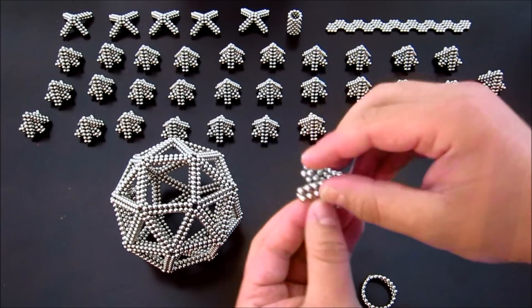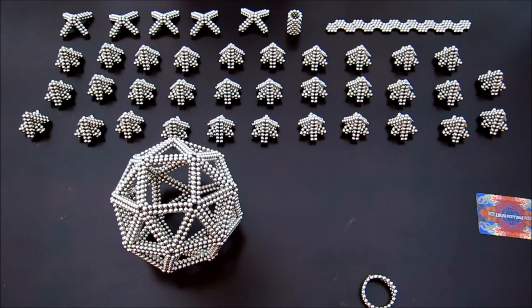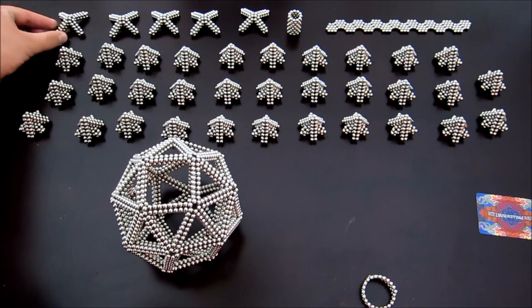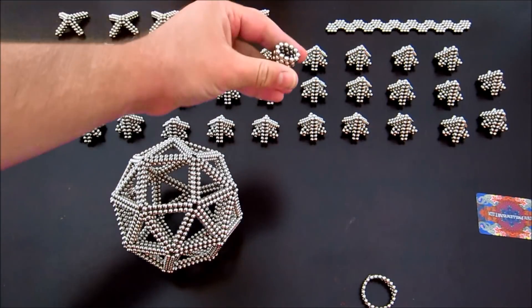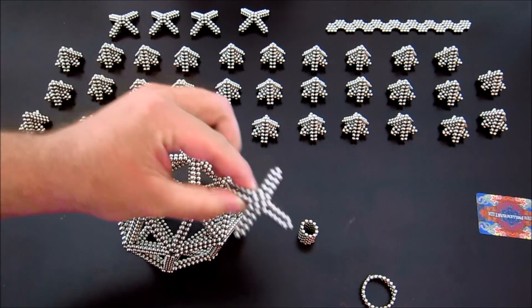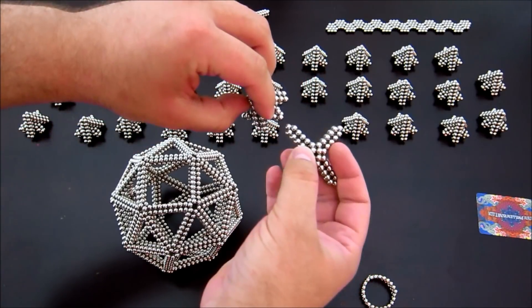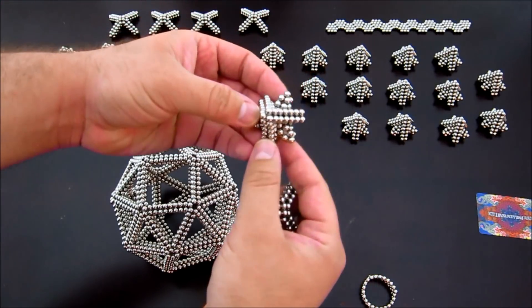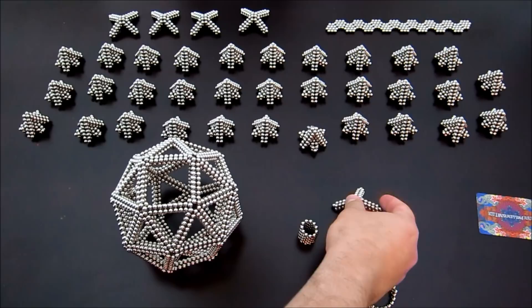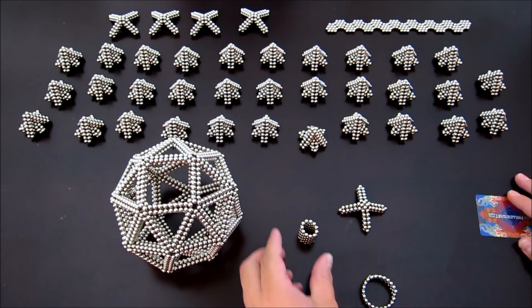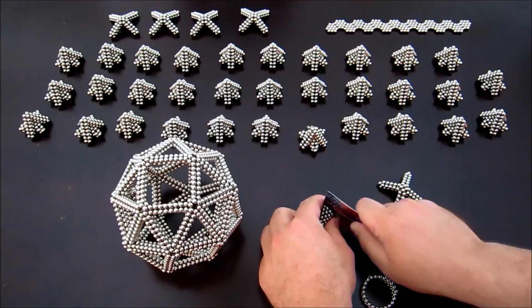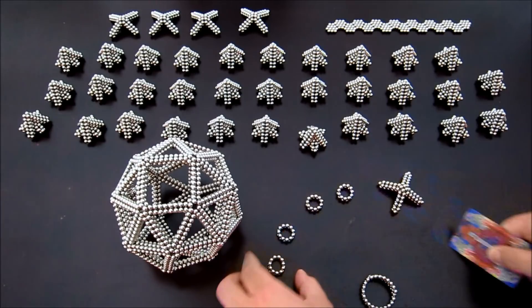That's how you end up with these subunits and again you need 32 of those. Now you also need six of these subunits here. To do that you need eight stacked rings again of 11. These ones polarity-wise you'll need to make them so that they are the same polarity as the underside of these subunits.